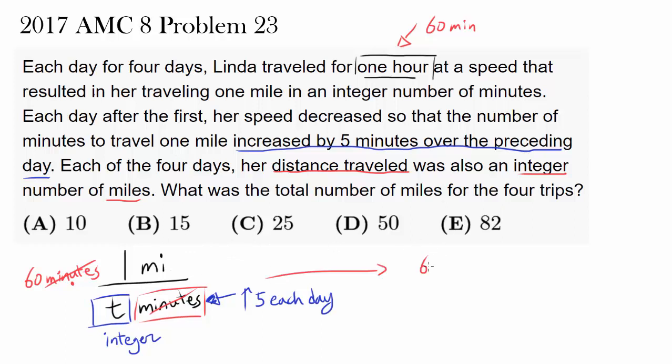And that's telling us that she is traveling 60 over T miles every single day. And we know this entire thing, the distance traveled, has to be integer. And we know T has to be integer. So what's that telling us about T?